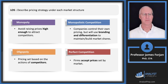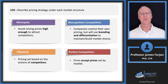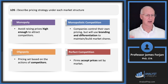Regarding pricing strategy: the monopolist avoids raising prices too high, mostly to avoid government attention or regulation. Oligopoly prices are set based on the actions of competitors — there's pricing interdependence, but they're related rather than totally correlated. Monopolistic competition uses branding and differentiation, while perfect competition firms simply accept prices.